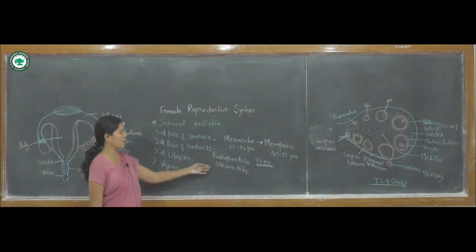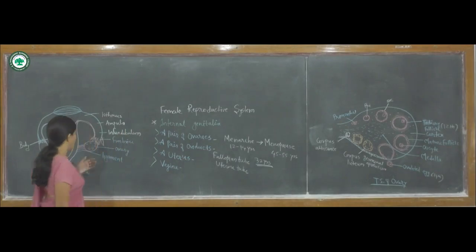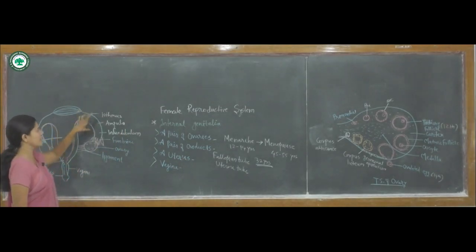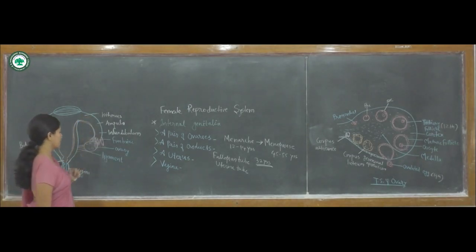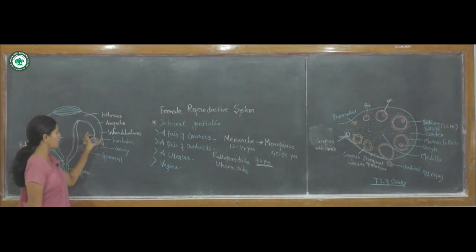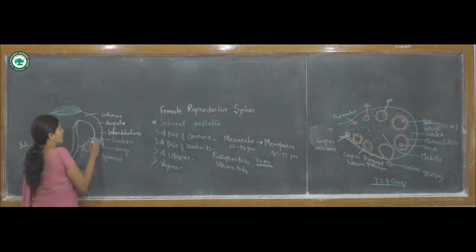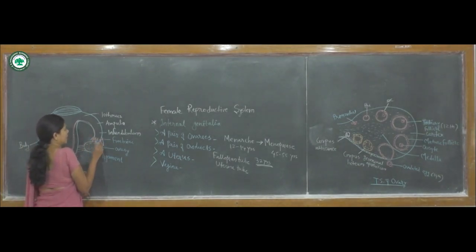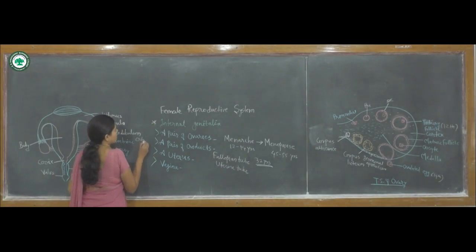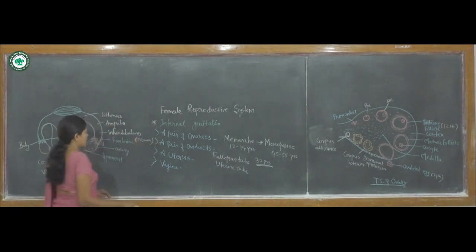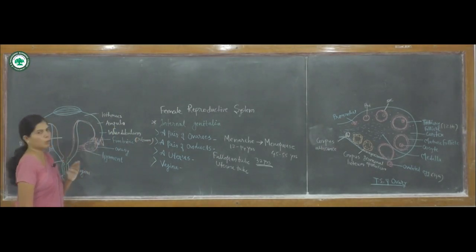The oviduct is also known as the uterine tube. The uterine tube or fallopian tube is seven to eight centimeters in length. The oviduct consists of finger-like projections called fimbriae that hold to the ovary. There is a small opening in the infundibulum region, and this opening is called the ostium.